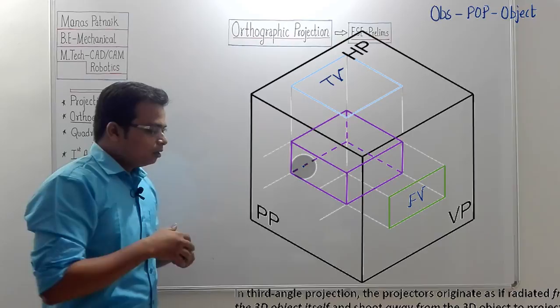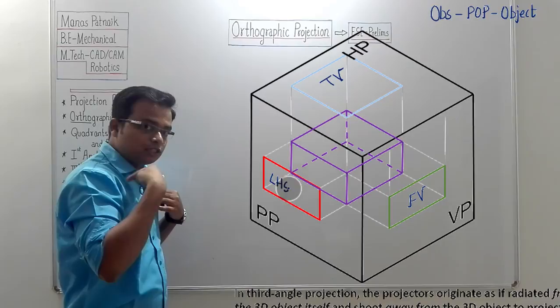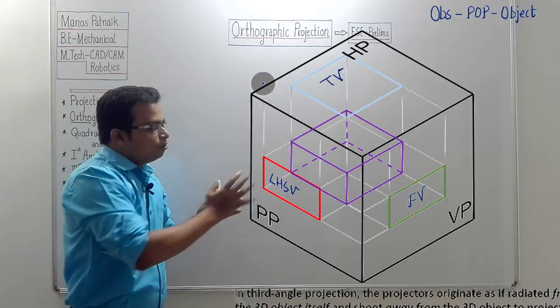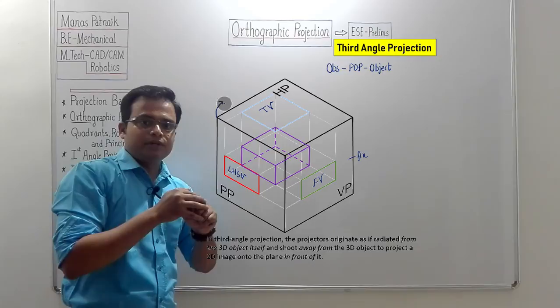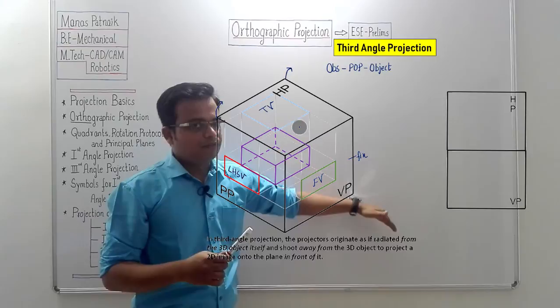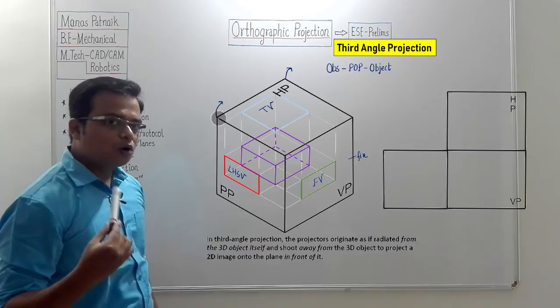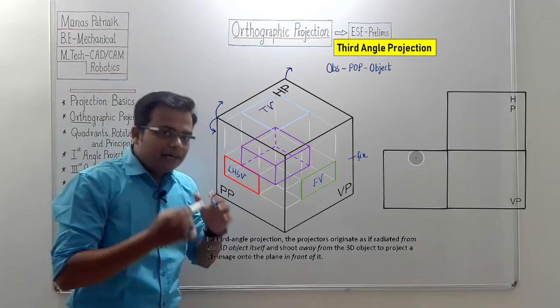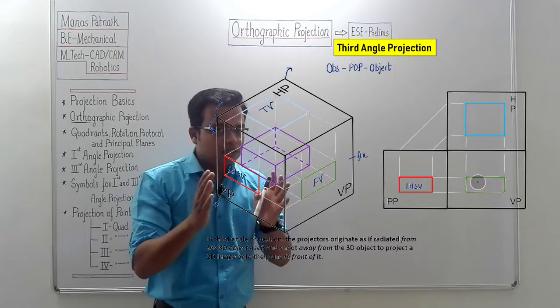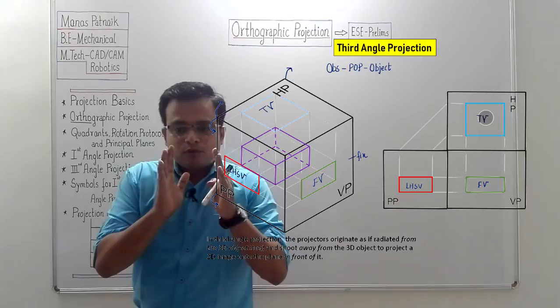We need to follow the rotation protocol for the side view as well. Fix the VP; rotate the HP clockwise by 90 degrees — it becomes coplanar with VP, placing the top view above and the front view below. Rotate PP anticlockwise by 90 degrees. This time, the left-hand side view ends up to the left of the front view — whereas in first angle projection, the left-hand side view was to the right of the front view.